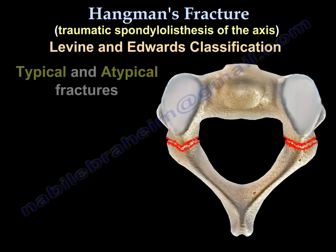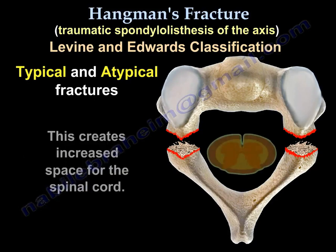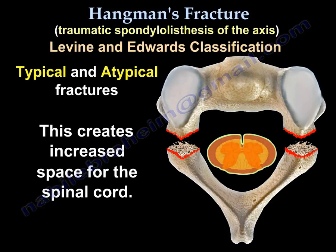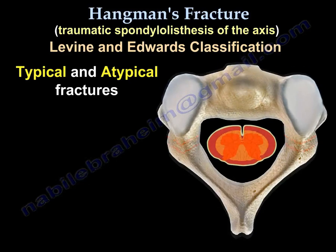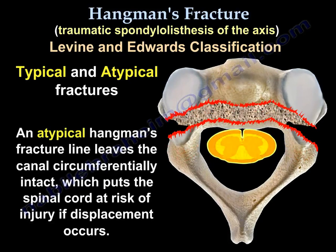It is important to know the difference between typical and atypical fractures. The typical Hangman's fracture displaces the vertebral body anteriorly and its posterior elements posteriorly, creating increased space for the spinal cord. In the atypical Hangman's fracture, the fracture line leaves the canal circumferentially intact, which puts the spinal cord at risk of injury if displacement occurs.